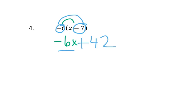Again, can I combine negative 6x and 42? No. So my final answer is negative 6x plus 42. Either way you do it is fine. Do what you're comfortable with.